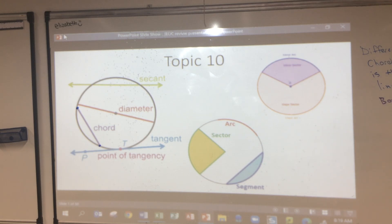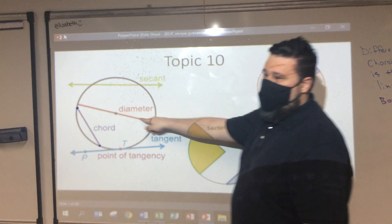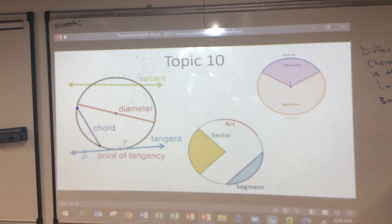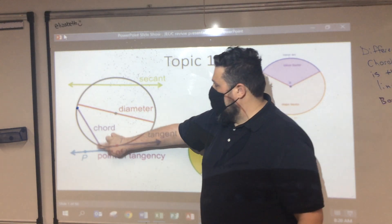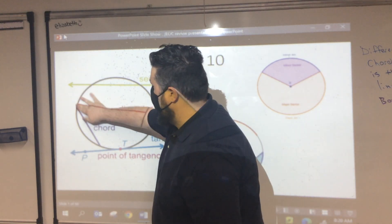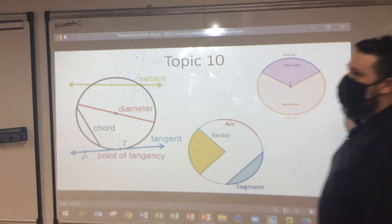By this definition, what would you call the diameter — a ray, a line segment, or a line? A line segment, right? Now, is the diameter also one of these other things? The diameter actually plays two roles — it's also a chord, because it both originates and ends on the circumference.